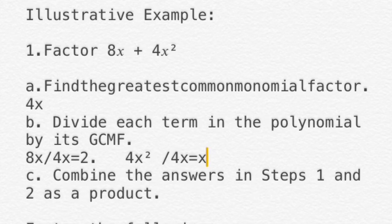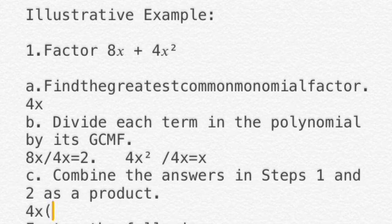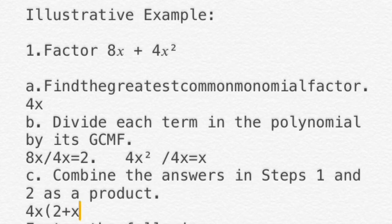The last step is to combine the answers from steps 1 and 2 as a product. Step 1 gave us 4x, and step 2 gave us 2 and x. So our answer is 4x times the quantity of 2 plus x.